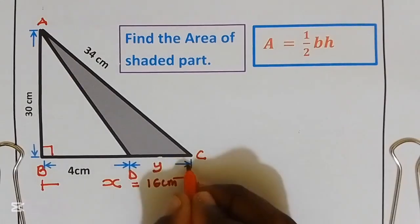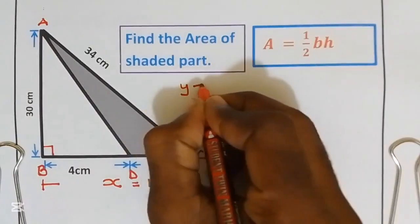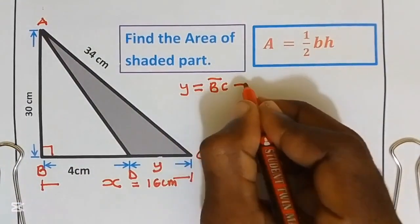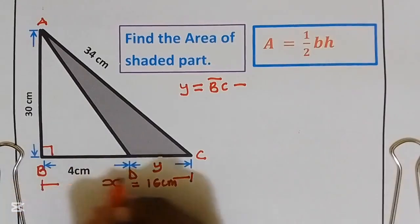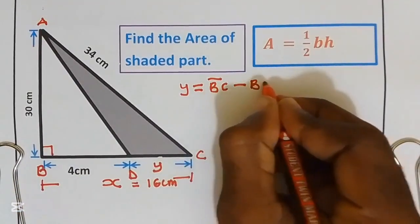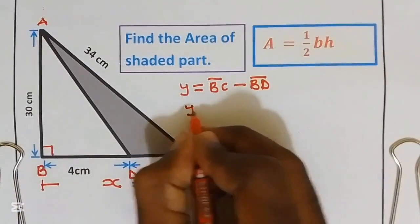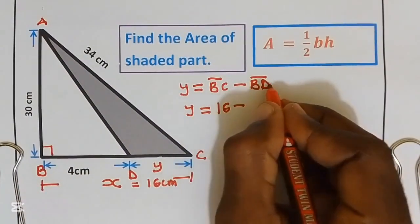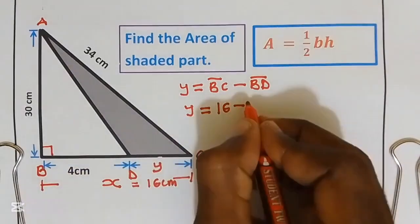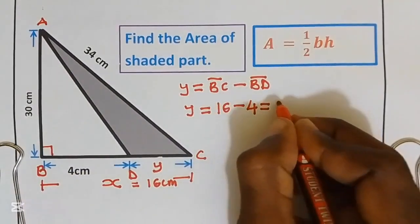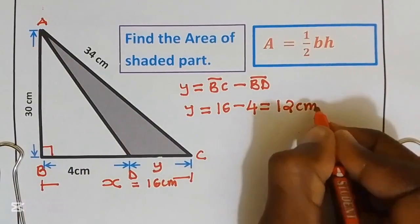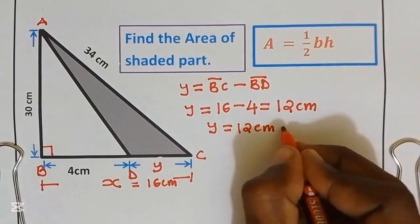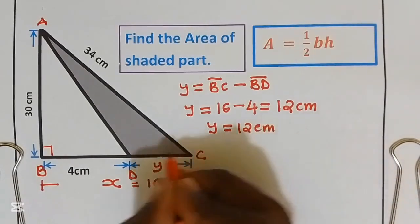Distance DC, which is equal to Y, equals distance BC take away distance BD. That is, Y equals BC equals 16 take away distance BD, which is equal to 4. So 16 take away 4, we get 12 centimeters. So distance Y equals 12 centimeters, which is the same as the base of the shaded part.